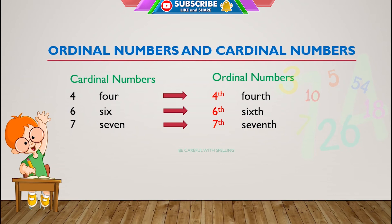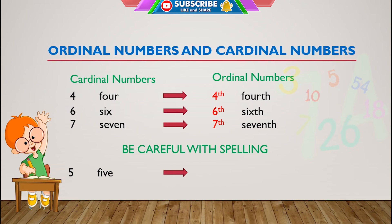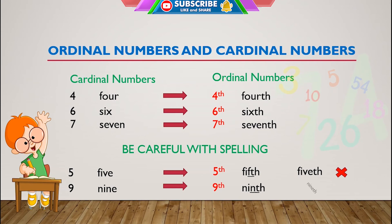Also, you have to be careful with the spelling of some ordinal numbers. For example, the number 5 becomes fifth — not fiveth, there's no V in it. And also the number 9 becomes ninth — there's no E in it.